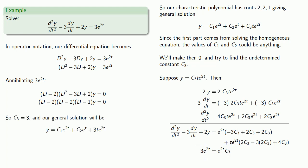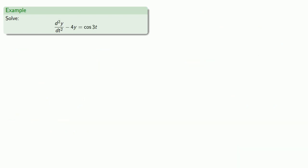And so our general solution will be c₁e^(2t) + c₂te^(2t) + 3te^(2t). Or consider this differential equation. In operator notation, the differential equation is (D² + 9)(D² - 4)y = 0. Since our non-homogeneous term on the right is cosine of 3t, we can annihilate it with D² plus 9.